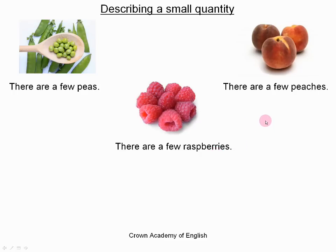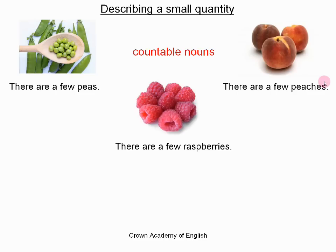The first thing that we should look at is all of these nouns — they are countable nouns. A countable noun is a noun that is a separate object. We can count a countable noun. Countable nouns can exist in the singular or the plural. Here, of course, they are all in the plural.